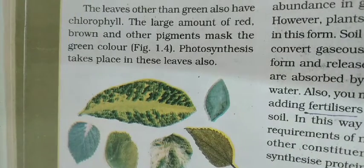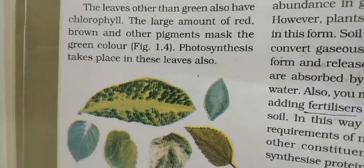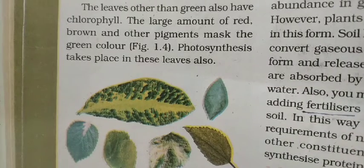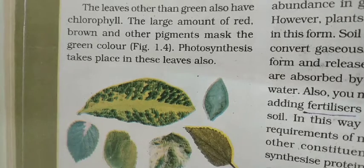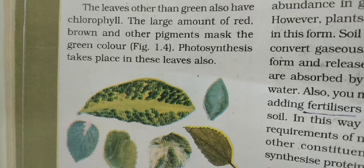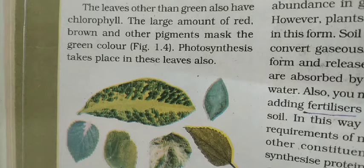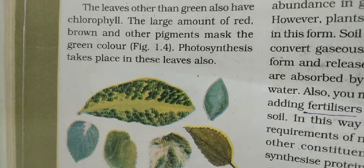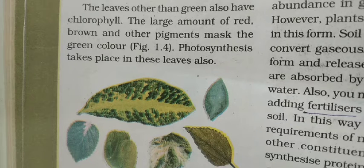Hi and welcome to science class. Today I am going to show you leaves that are not completely green in color. In the previous video you studied that to carry out photosynthesis, leaves should contain green color pigments called chlorophyll. But there are a few plants that have variegated leaves — leaves with different colors. So the question is: does photosynthesis take place in these leaves or not?